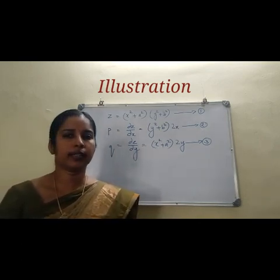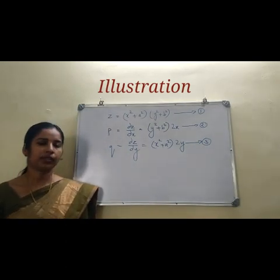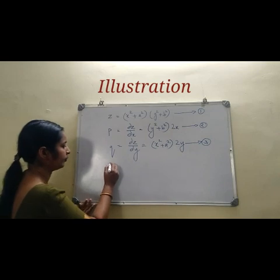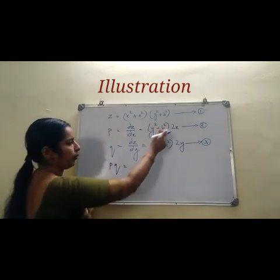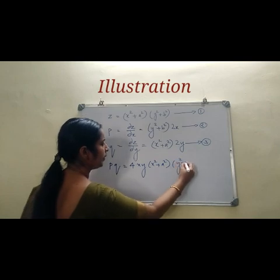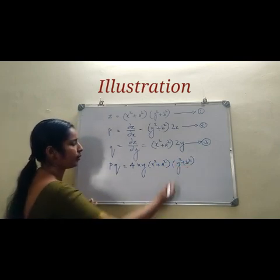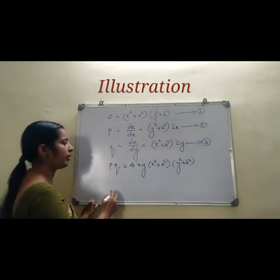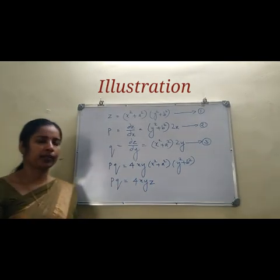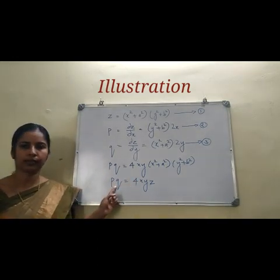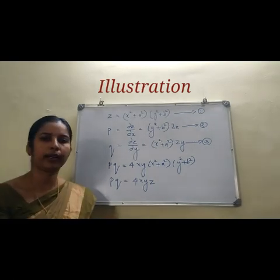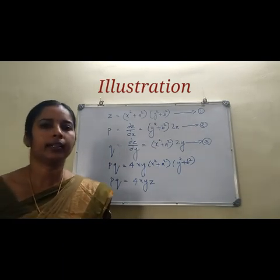In the previous example it was easy to eliminate a and b; here it is not so easy. Consider pq: pq = 2x · 2y · (x² + a²)(y² + b²) = 4xy · (x² + a²)(y² + b²). From equation 1, (x² + a²)(y² + b²) = z. So pq = 4xyz. This is the required partial differential equation, or you can rewrite it as pq − 4xyz = 0.